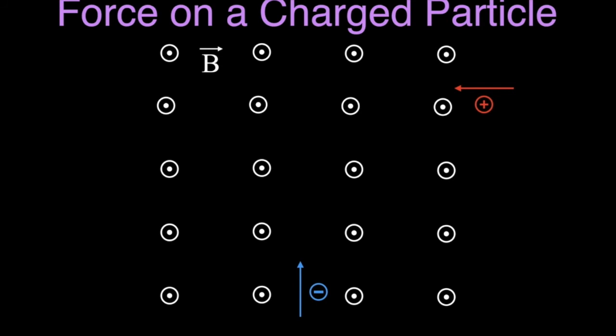The last two examples have the magnetic field coming out of the page, indicated by dots. For the positively charged particle, I take my right hand behind my right ear — thumb to the left, fingers pointing behind me — and my palm faces up, so the force is up on that charged particle. For the last example using my left hand, with my thumb pointing up and my hand turned so the magnetic field comes out toward me, my palm faces to the left — meaning the force on that charged particle is to the left.